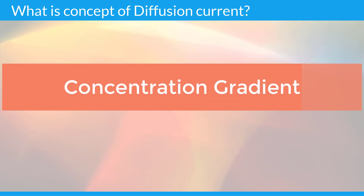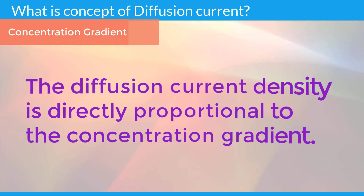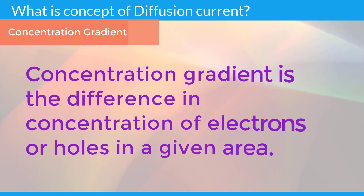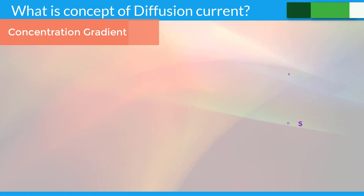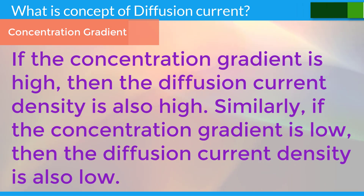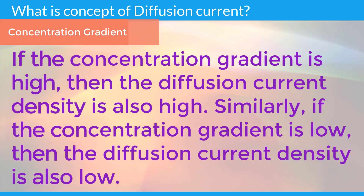Concentration gradient: The diffusion current density is directly proportional to the concentration gradient. Concentration gradient is the difference in concentration of electrons or holes in a given area. If the concentration gradient is high, then the diffusion current density is also high. Similarly, if the concentration gradient is low, then the diffusion current density is also low.